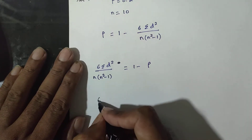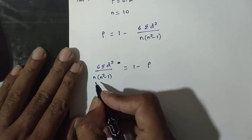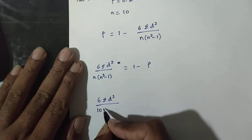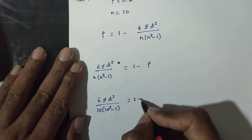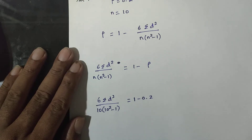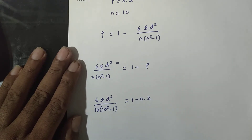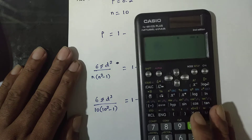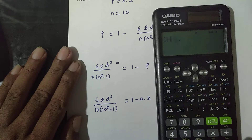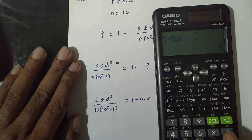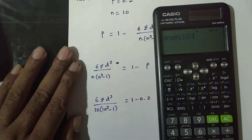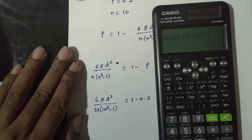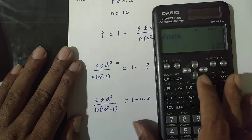From the formula: 6 into summation of d² divided by n into n squared minus 1 equals 1 minus 0.2, which is 0.8. With n equals 10: n into n squared minus 1 equals 10 into 99 equals 990. Then 0.8 into 990 divided by 6 equals 132.